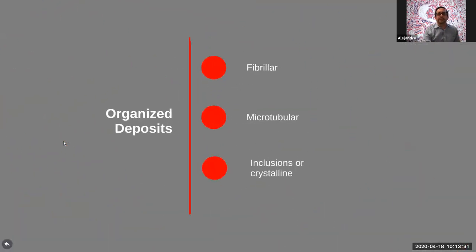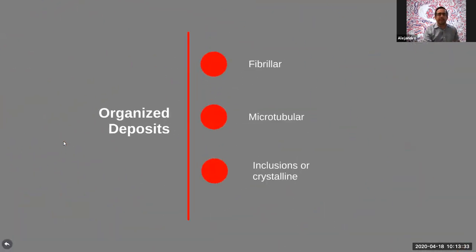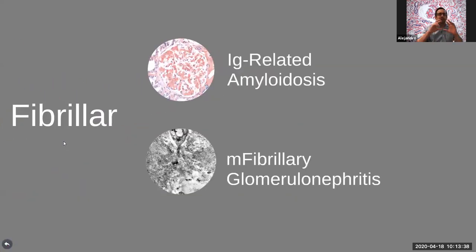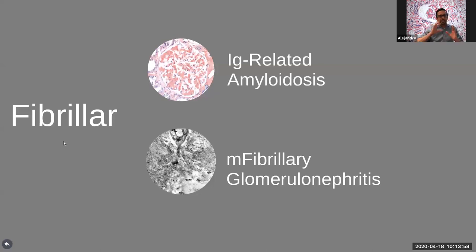Among diseases with organized deposits, there are three categories. The first includes those with a fibrillar morphology — the best-known being amyloidosis, and less commonly, monoclonal fibrillary glomerulonephritis. There is actually a paper in press in KI that suggests removing fibrillary GN from this classification entirely. With that, let's start with our cases.